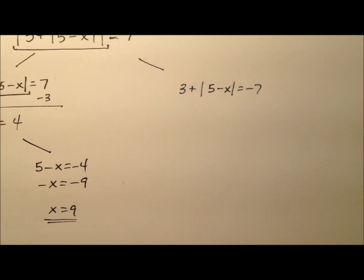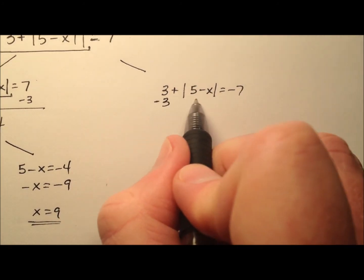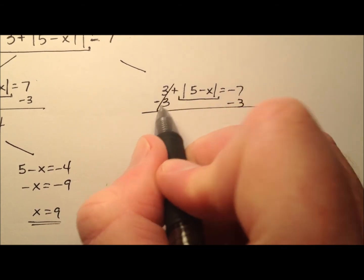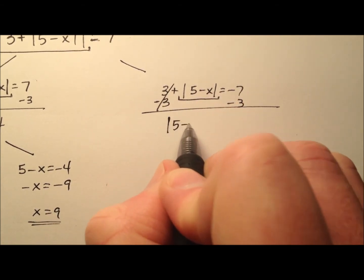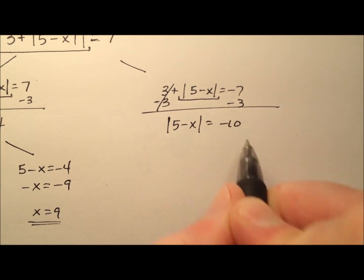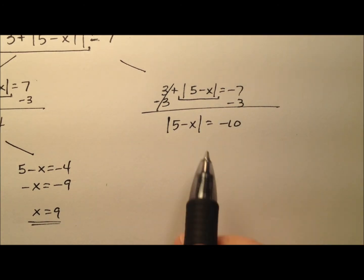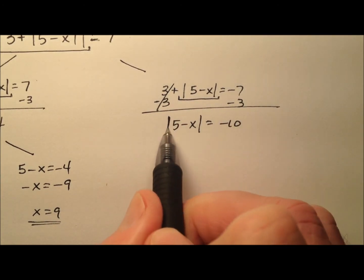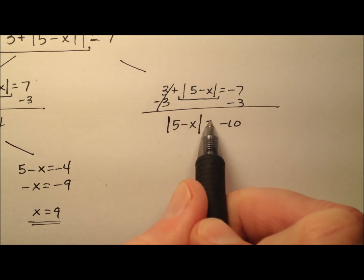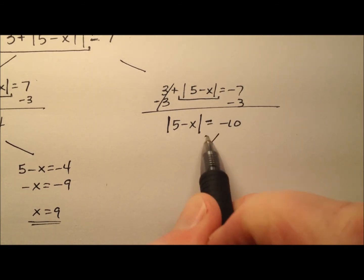So let's go ahead and focus on the other side now. When I isolate this absolute value expression, it's the absolute value of 5 minus x equals negative 10. Oh, but we have a problem because can absolute value ever be negative like this? Well, it can't.